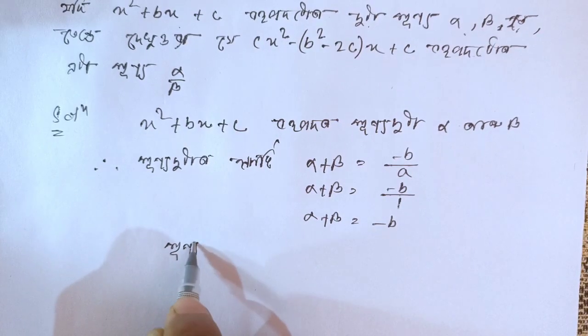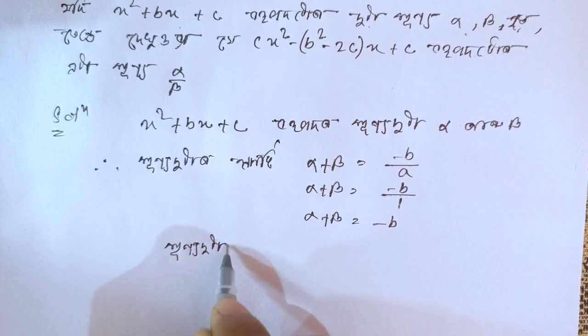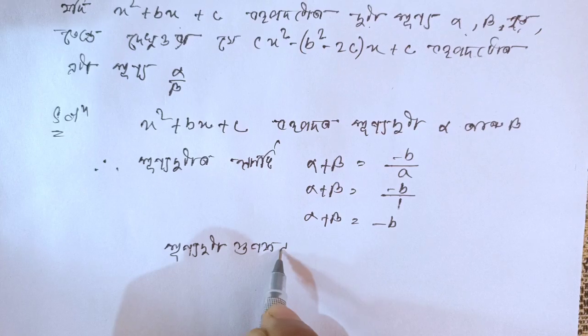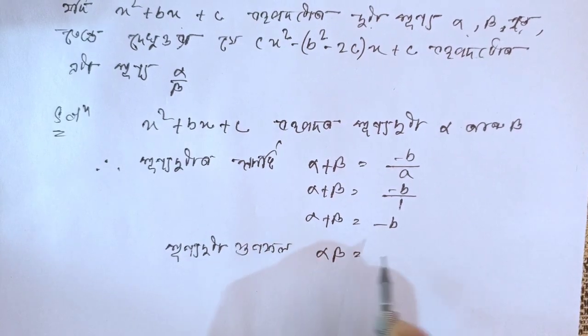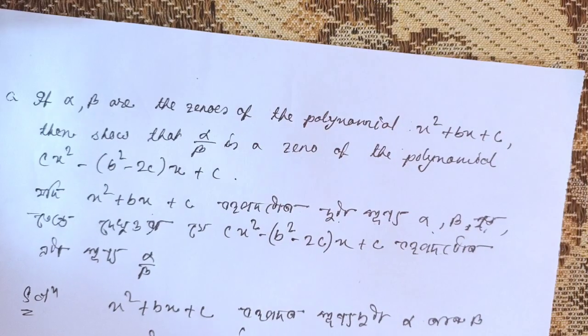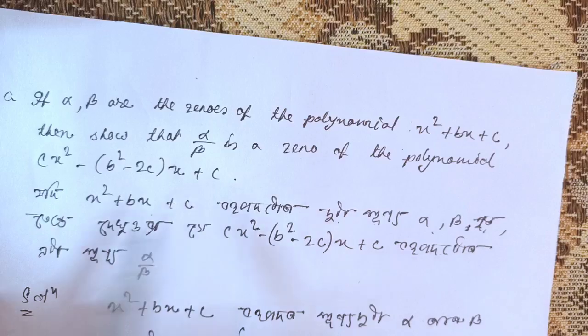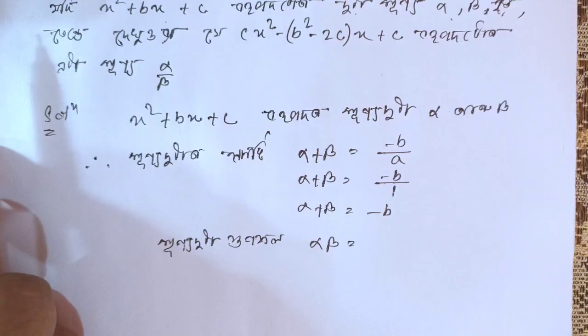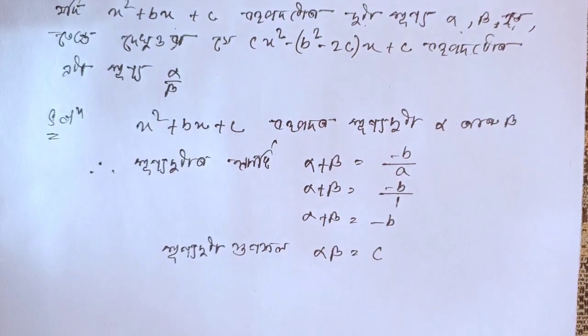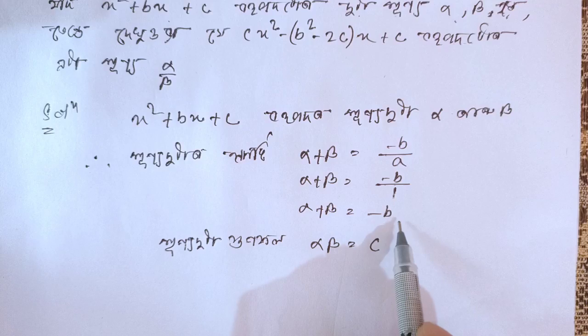Now, product of the zeros: αβ equals c/a. The c value is c and a is 1, so c/1 equals c. Therefore αβ = c.